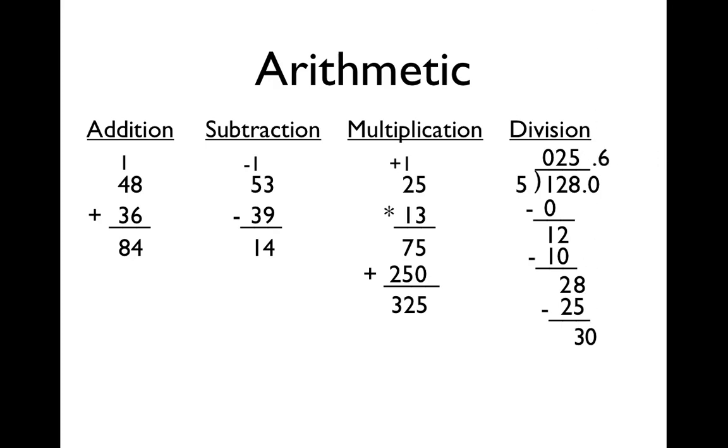And 5 goes into 30 exactly 6 times. So now it's .6. And 5 times 6 is 30. 30 minus 30 is 0. And you keep doing, you keep dividing, you keep doing this until you get the remainder and the 0 for the multiplication. So that's arithmetic.